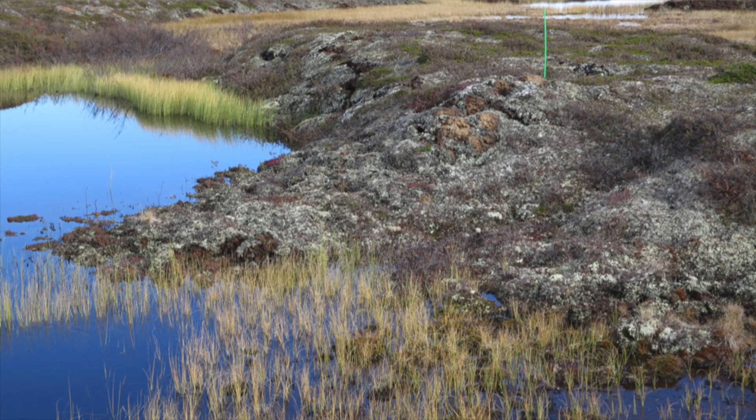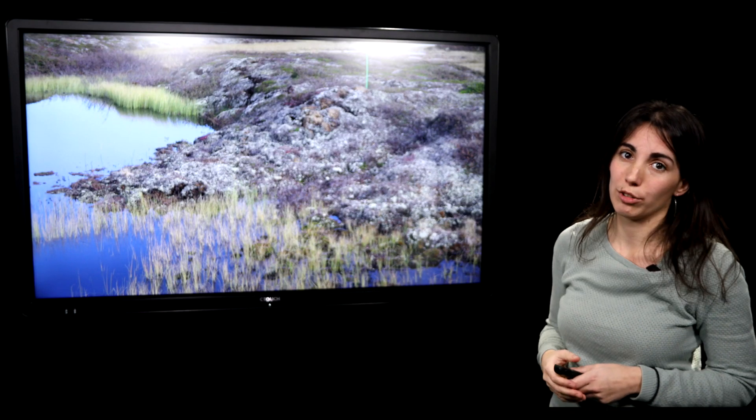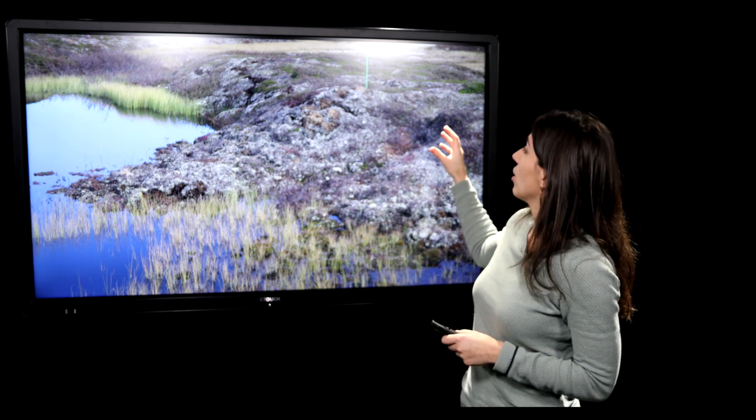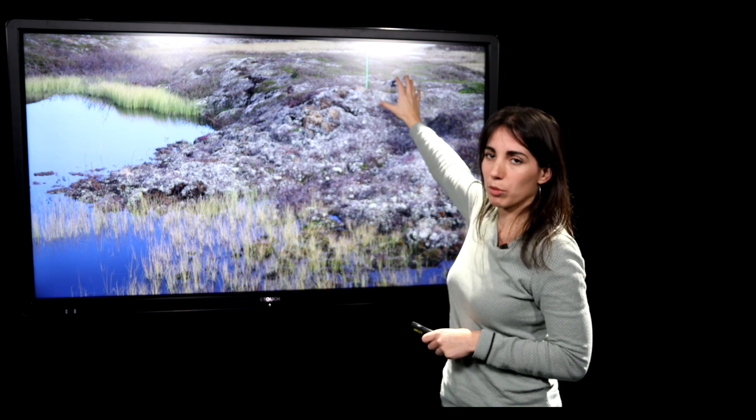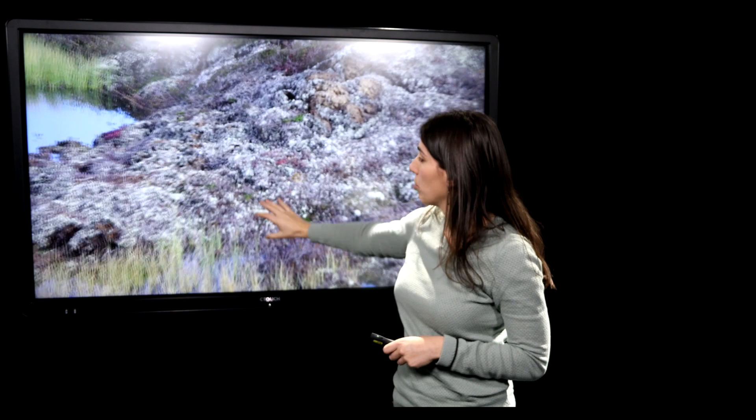So we use this hydrological gradient to study what happens to the greenhouse gas emissions when permafrost is thawing. So we have here a gradient from intact permafrost to permafrost that is slumping.